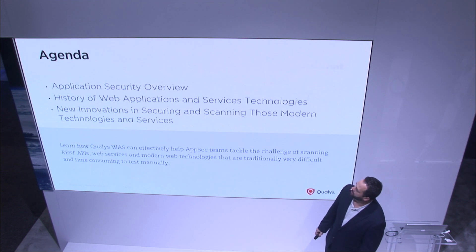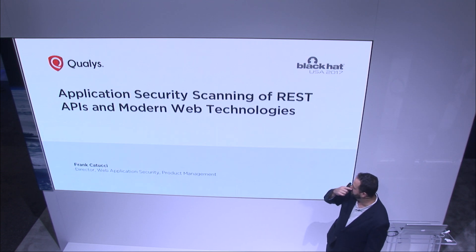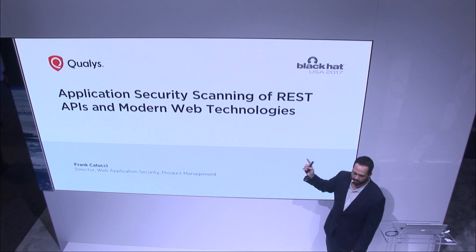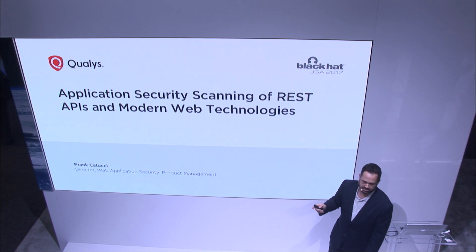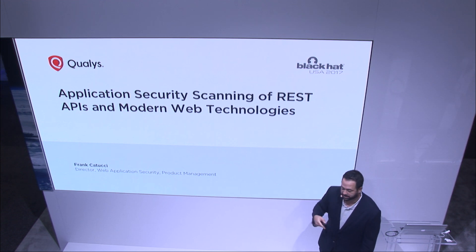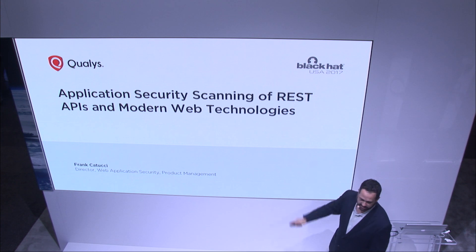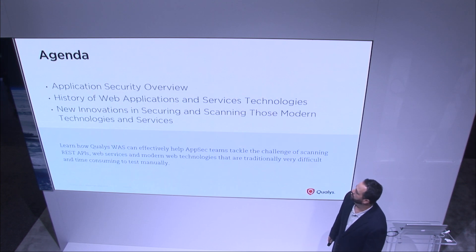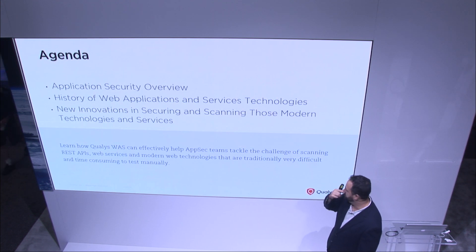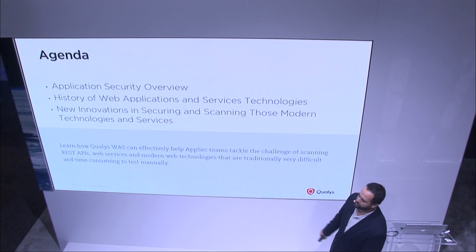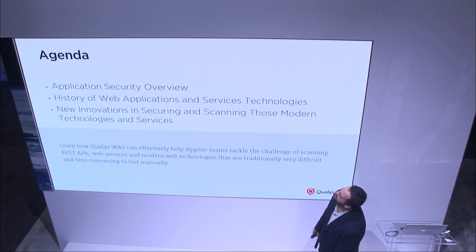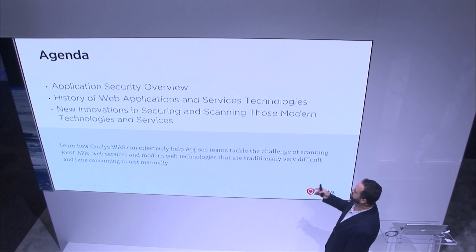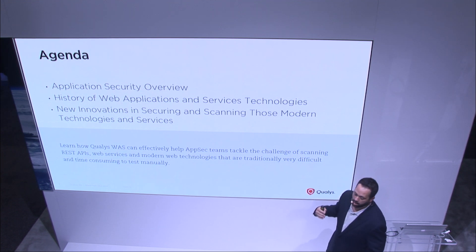We're going to be talking today about application security scanning. We're going to focus on REST APIs and modern web technologies, and the challenges that the evolution of the web is really bringing us, and the automated abilities to be able to automate scanning these kinds of technologies. The agenda is fairly simple: a quick application security overview, a history review, and we'll talk about newer innovations and what we're doing to automate application security scanning with newer technologies.